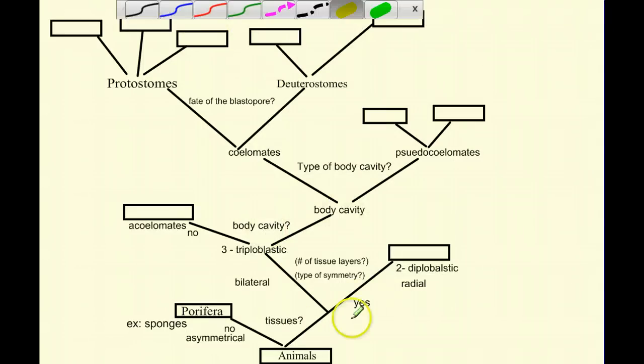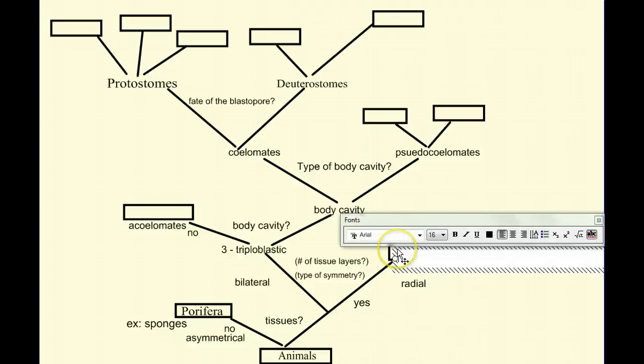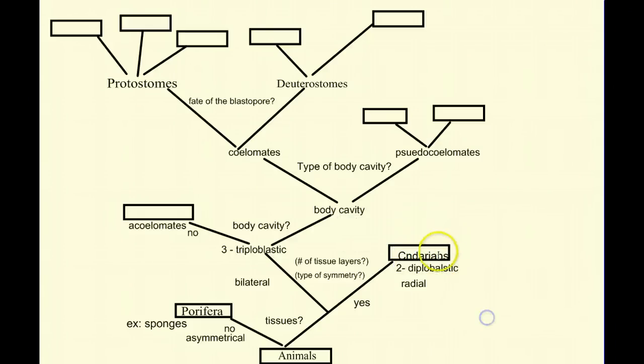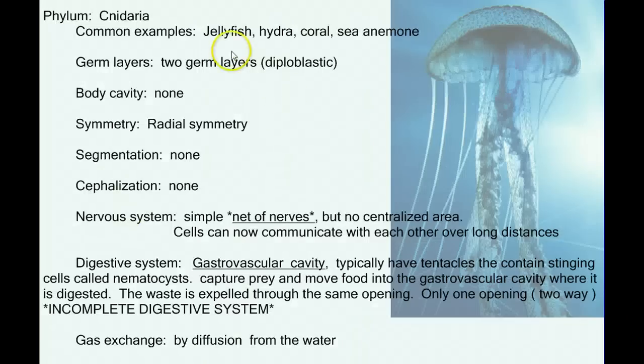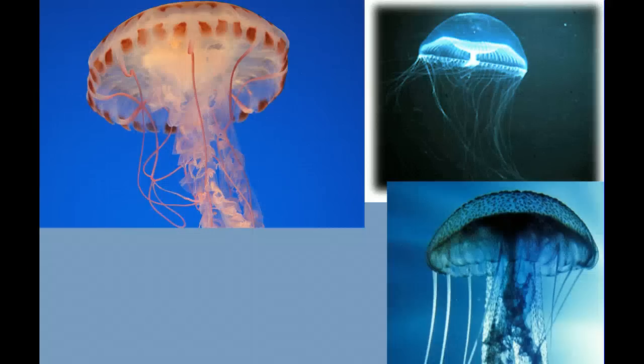Now let's move down this branch of the animals that have true tissues. We said that animals that have true tissues are then divided by how many tissue layers and the type of symmetry. So we'll go down this branch of the diploblastic, or two germ layer animals, that have radial symmetry. Now the animals that we're going to use to represent this branch are the cnidarians. Now there are other animals that represent this branch, but we're going to use cnidarians as kind of the poster child for this whole branch. So what is a cnidarian? Well, jellyfish, hydra, coral, sea anemones. They're all examples of cnidarians.